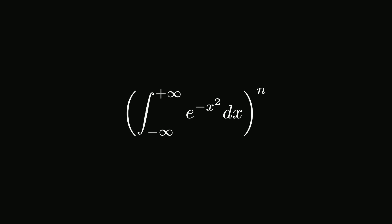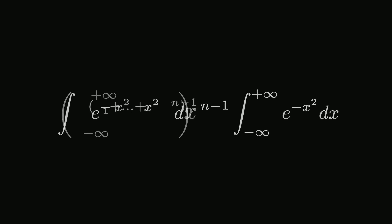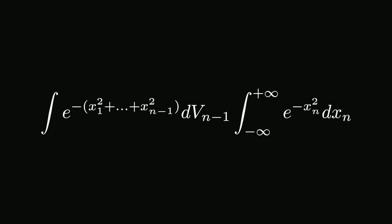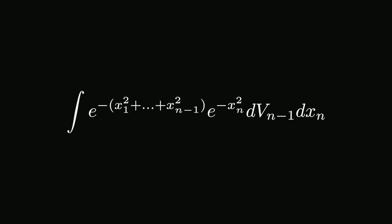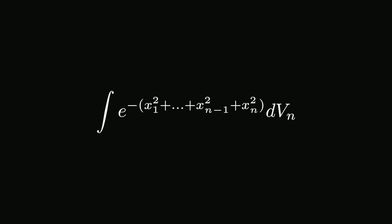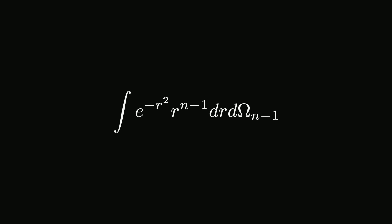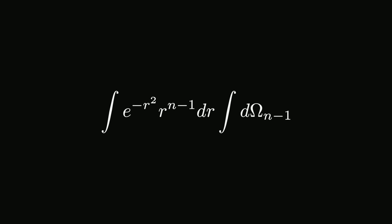Instead of our previous integral, we raise it to the power of n instead of 2, and use the exponent combination trick to obtain the integral from negative infinity to positive infinity of e to the minus x1 squared plus x2 squared plus x3 squared all the way to xn squared, dx1 to dxn — which we know equals the square root of pi to the power of n. By setting x1 squared plus x2 squared all the way to xn squared equal to r squared and doing all the required substitutions, we end up with the integral of e to the minus r squared times r to the n minus 1 dr, multiplied by the integral of d omega n minus 1.